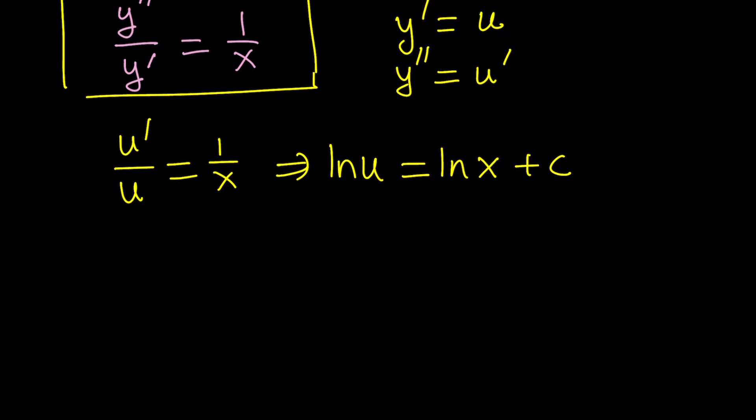Now, of course, u is y prime. So, we kind of have to back substitute it. But before that, you can isolate u by e to the power of both sides. Let's go ahead and do e to the power of both sides. I'm talking about e to the ln u being equal to e to the ln x plus c, which can be written as e to the ln x times e to the power of c.